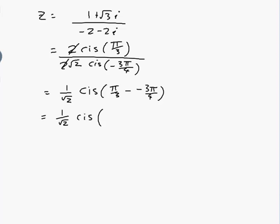We need to put them over a common denominator. Times this one by 4 which would be 4 pi on 12, plus times this one by 3, 9 pi on 12, which would be 1 on root 2 cis of 13 pi on 12.